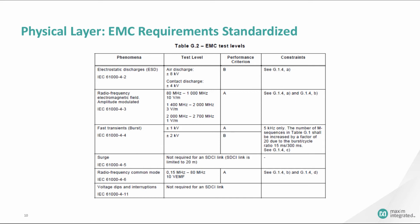Industrial environments are harsh and require special considerations. The IO-Link standard sets a minimum EMC (electromagnetic compatibility) performance requirement to ensure devices can withstand common transient issues. For example, ESD requires ±8 kilovolts for air discharge or ±4 kilovolts for contact discharge, based on the IEC 61000-4-2 standard.